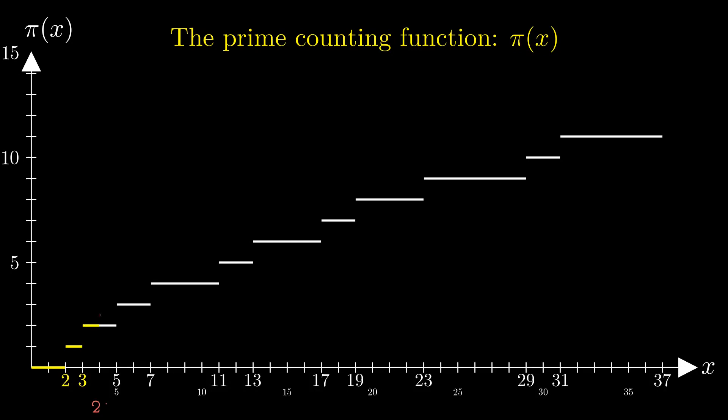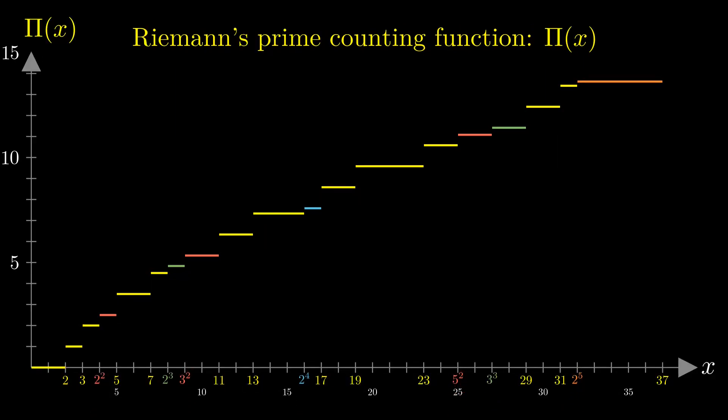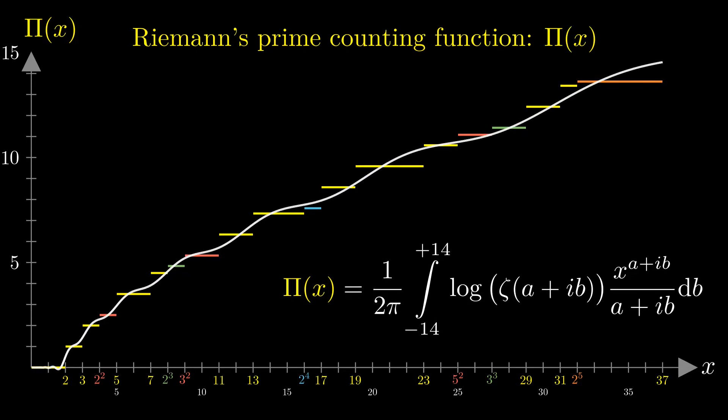It turns out that a close relative of the prime counting function is more convenient. It is called Riemann's prime counting function and denoted with capital pi. As before, the function increases by one whenever the input value is prime. Additionally, it steps up by one half at squares of prime numbers like 4, 9, 25 and so on. A step of one third is performed at every third power of a prime, one fourth at every fourth power and so on. Amazingly, this prime counting function can be calculated with the following integral. The integral can be further evaluated but for this video it will be the object of interest. We try to understand its implications and re-derive it in part 4.